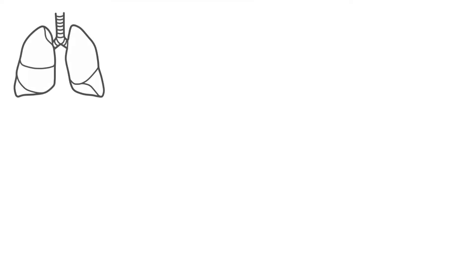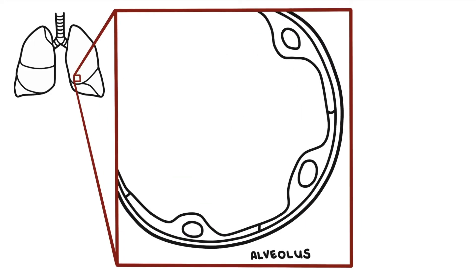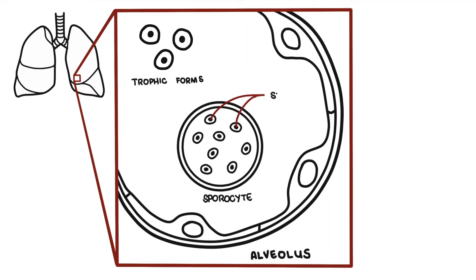Pneumocystis jirovecii is an interesting organism. Pneumocystis loves the lungs — they stay and live in the alveoli, and for the most part do not cause any problems in people with a normal immune system. There are three developmental stages of Pneumocystis: the trophic form, the sporocyte, and the spores.